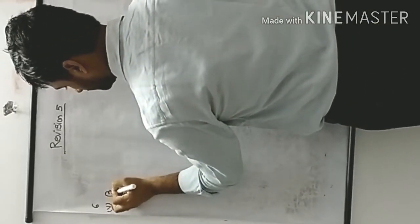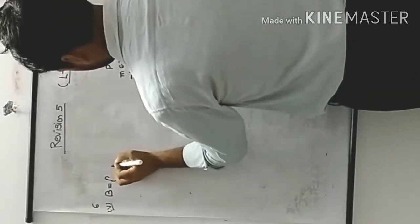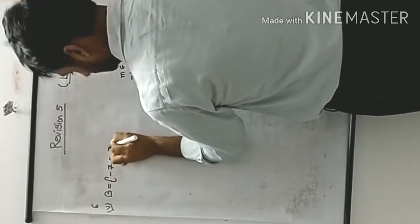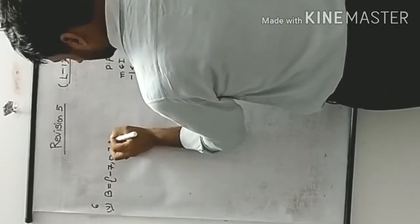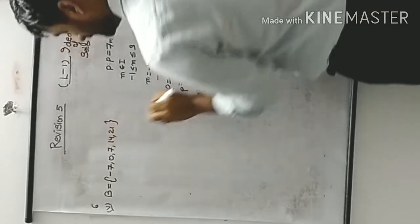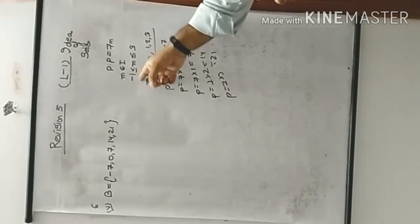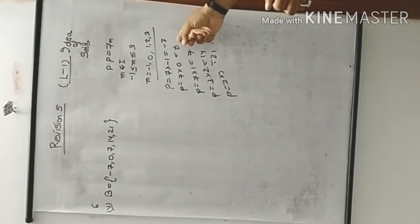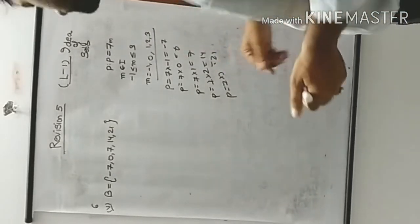Let me write the set: B = {-7, 0, 7, 14, 21}. If you visualize, these are basically multiples of 7 only. That is the answer.